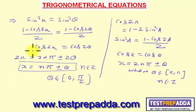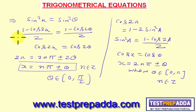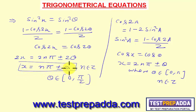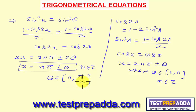So the conclusion is: if sin²x = sin²θ, then the general solution is x = nπ ± θ, where θ ∈ [0, π/2] and n belongs to integers.